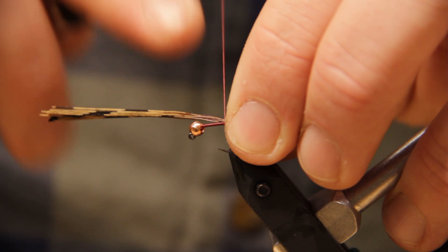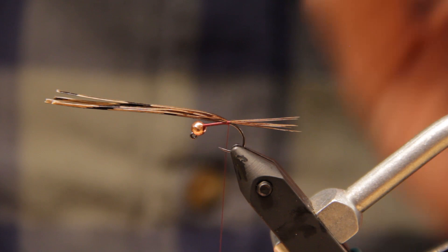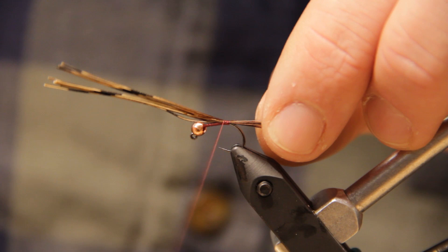So we're gonna start with a pheasant tail, probably about four to five fibers, and I'm gonna tie those in just behind the point of the hook so they're shooting straight out of the back. And then I'm going to use the pheasant tail to build up a little bit of a body.